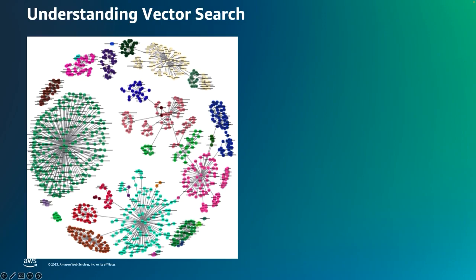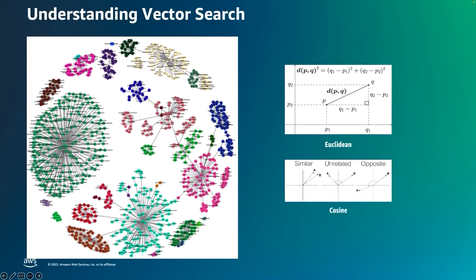What is vector search? Vector search is an ability to find similar items or entities based on the numerical representation known as vectors. Vector search requires items and documents to be represented as high dimensional vectors in the vector space. Each dimension of the vector represents a particular feature or attribute of the item. By representing these items as numerical vectors, it becomes easier to calculate similarities using mathematical formulas such as Euclidean distance and cosine similarity. Smaller the distance, greater is the similarity and vice versa.